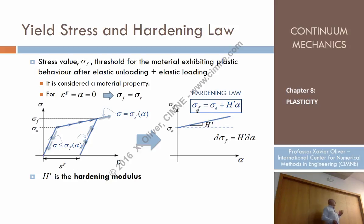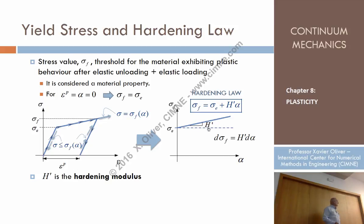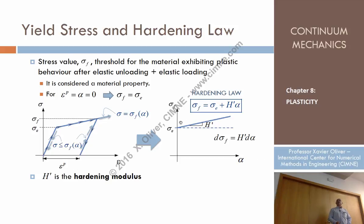The yield stress is equal to the initial elastic limit plus a constant called the hardening modulus, denoted H prime, times the hardening variable alpha. This relationship is represented as a straight line in the diagram, and since the hardening value is always positive, it only has meaning in that part of the diagram.